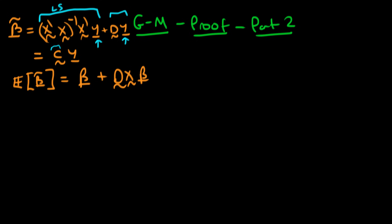We got this expression for the expectation of beta tilde: it equals the population parameter beta plus dX times beta, where in deriving this we've assumed zero conditional mean of errors. It's quite easy to see the conditions under which beta tilde will be unbiased — it will be unbiased if this second term is equal to zero.